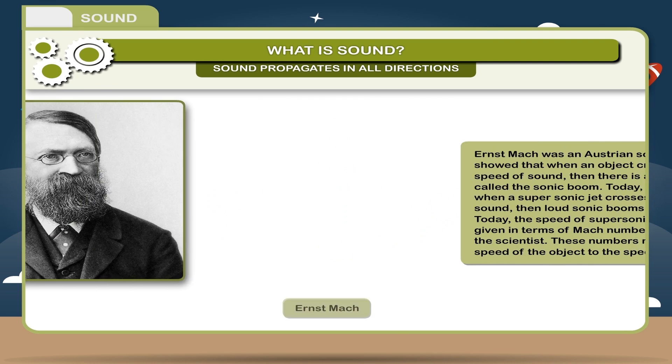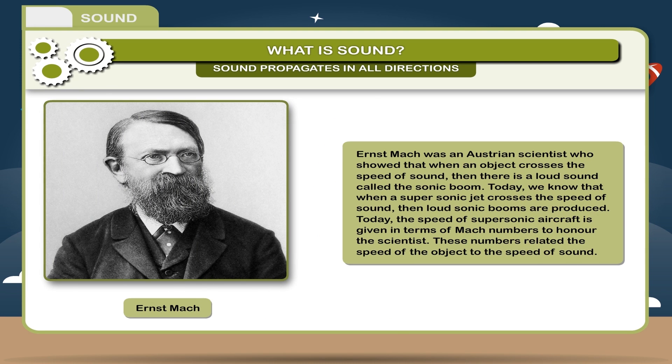Scientist. Ernst Mach was an Austrian scientist who showed that when an object crosses the speed of sound, then there is a loud sound called the sonic boom. Today, we know that when a supersonic jet crosses the speed of sound, then loud sonic booms are produced.